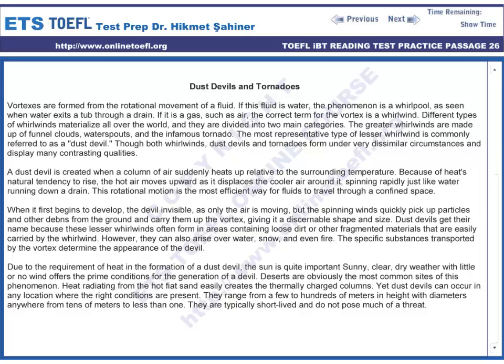Dust Devils and Tornadoes. Vortexes are formed from the rotational movement of a fluid. If this fluid is water, the phenomenon is a whirlpool, as seen when water exits a tub through a drain. If it is a gas such as air, the correct term for the vortex is a whirlwind.